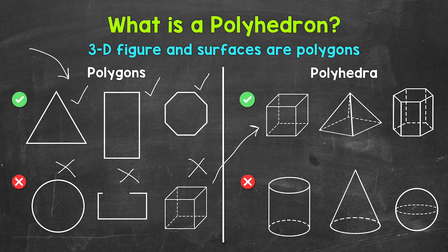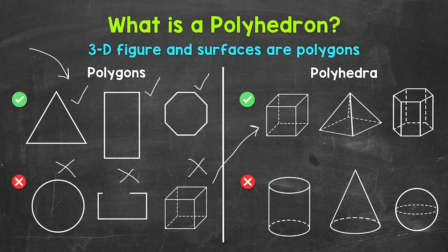So let's move over to examples of polyhedra, and that's going to help us better understand what a polyhedron is. Let's start with a cube, which is a 3D figure, and if we look at all of the surfaces — all of the faces — those faces are all quadrilaterals, more specifically squares. So all of the surfaces, or faces, are polygons. So 3D and the surfaces are all polygons, so that is a polyhedron.